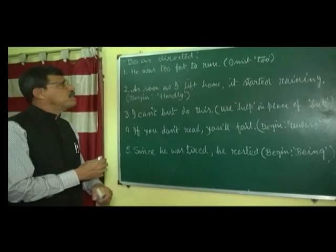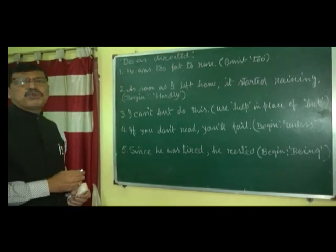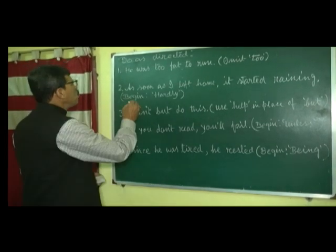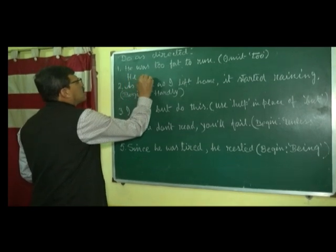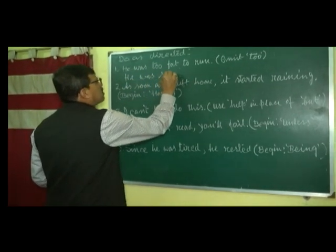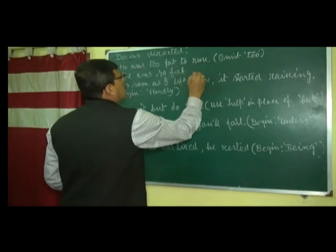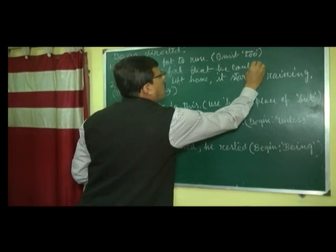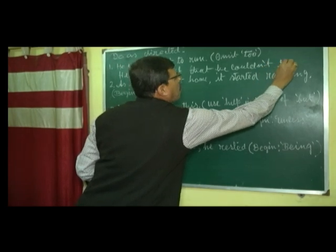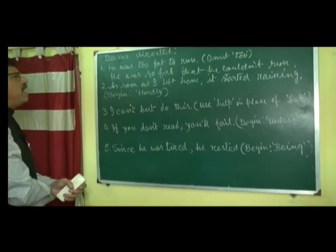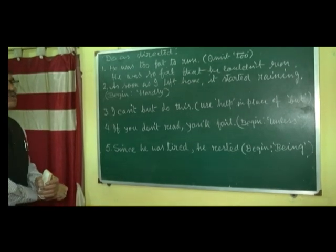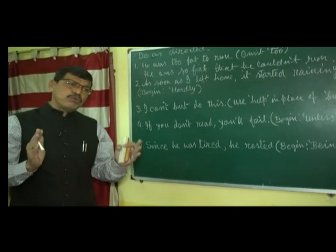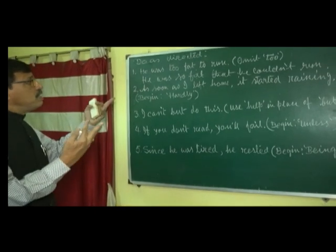Number one: 'He was too fat to run.' To omit 'too', write: 'He was so fat that he couldn't run.' You must remember one thing — you can't change the tense. If the question is in past tense, you have to write it in past tense. If the question is in present tense, then you have to answer it in present tense also.